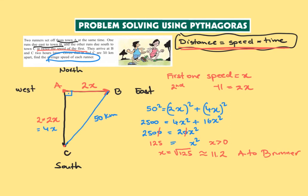And the other one running south from A to C is running twice this speed, so it's going to be 2 times x is equal to 2 times 11.2, and is equal approximately 22.4 kilometers per hour.